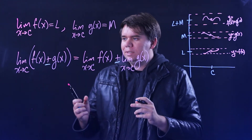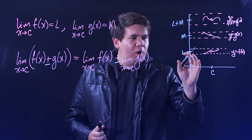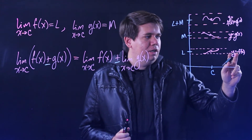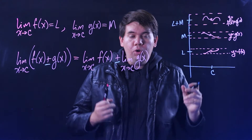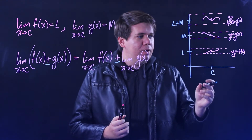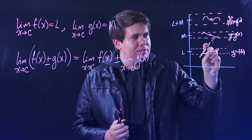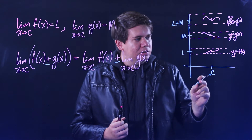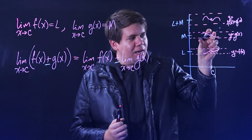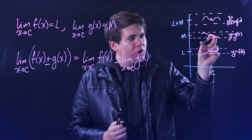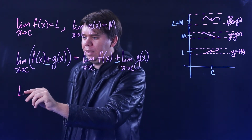There are similar limit laws. What if instead of adding and subtracting, we multiply? You can imagine multiplying F by some constant. Here's the graph of F of X — you might try to graph two times F of X, or a half of F of X. If you graph two times F of X, all these values are twice as large. So if F of X was getting arbitrarily close to L, then two times F of X would just be getting arbitrarily close to two times L.